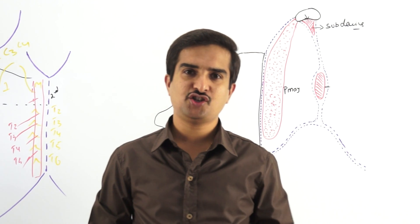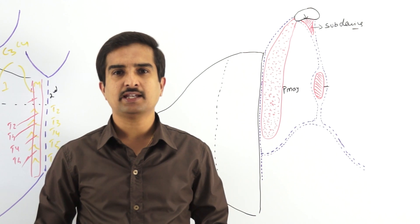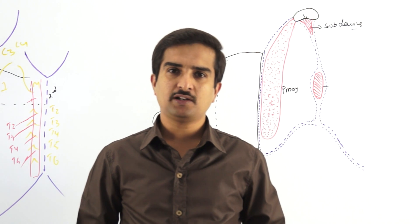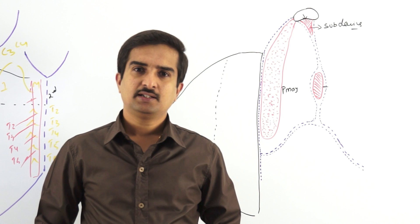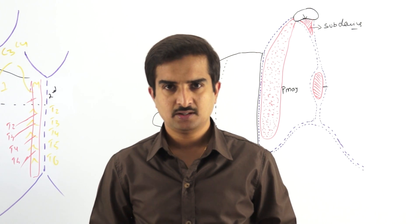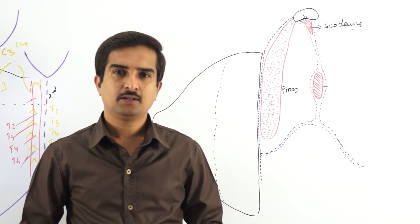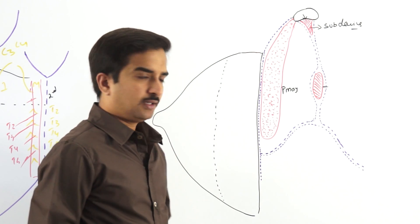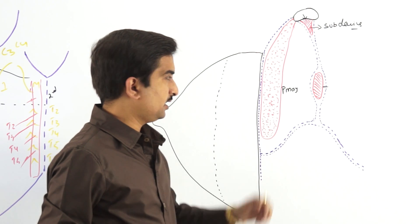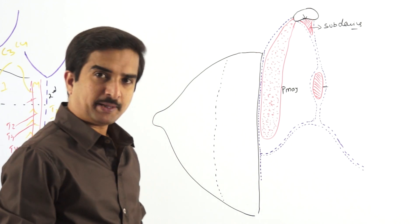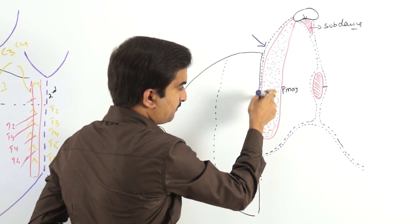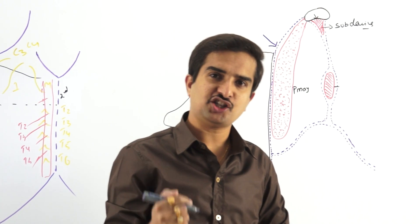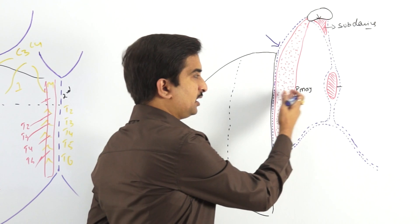After we finish the superficial fascia of the pectoral region, now let us discuss the deep fascia. The deep fascia of the pectoral region is called the pectoral fascia — the two terms refer to the same structure. It is called the pectoral fascia because it covers the pectoralis major muscle. Immediately beneath the breast you can see the pectoralis major muscle, which is covered by this fascia called the pectoral fascia.